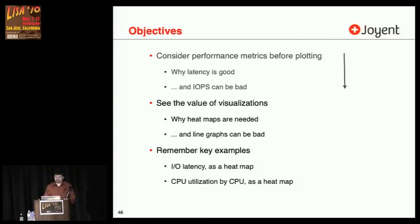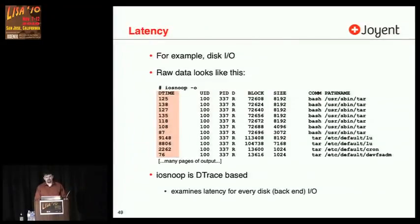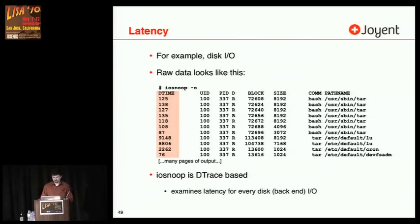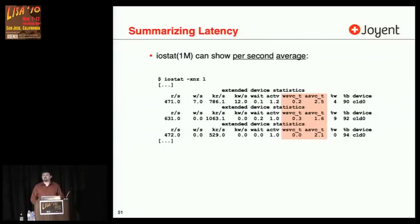Now to see the value of visualizations — I'll start with some current examples. So far we've picked latency and utilization. Looking at the actual raw data for latency, you can use tools like iosnoop from the DTrace toolkit, which lists IO latency live. If I run that, I'll get many pages of output — I won't have lost anything. This is the raw data for examining disk IO latency, measuring every single event. The events are tuples: IO completion time and the IO latency. There can be thousands of these per second. As a system administrator, you can't read thousands per second to identify a performance issue — we need some form to summarize it.